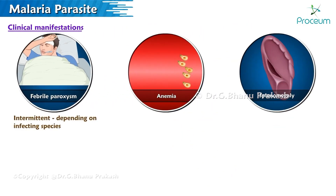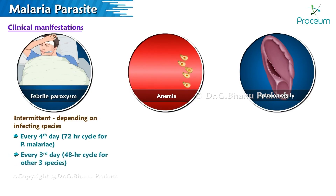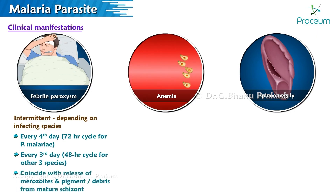Febrile paroxysm is intermittent, depending on the infecting species. It occurs every fourth day — a 72-hour cycle — for Plasmodium malariae, and every third day — a 48-hour cycle — for the other three species. Febrile paroxysms coincide with the release of merozoites and pigment debris from mature schizonts. Anemia in benign malaria is normocytic, normochromic anemia.